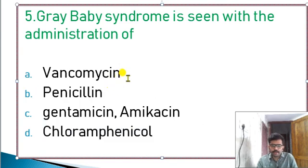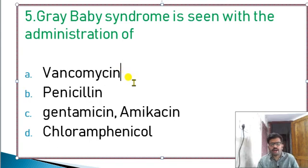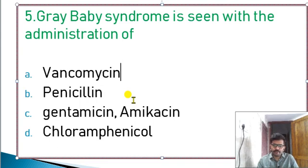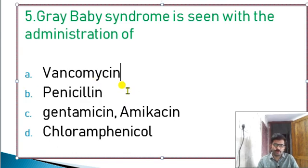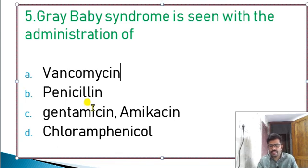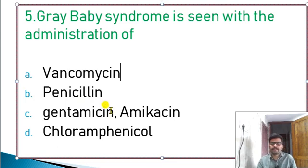Vancomycin is an antibiotic. Rapid infusion of vancomycin causes red neck syndrome, also called red man syndrome — redness all over the body. Vancomycin should be infused slowly to avoid red man syndrome. Penicillin is the drug of choice for rheumatic fever.